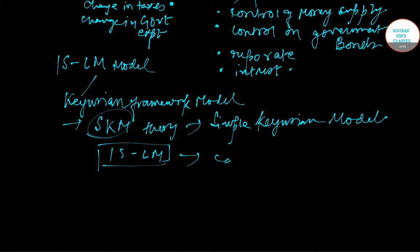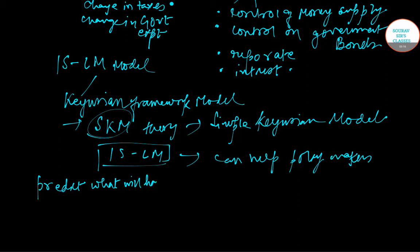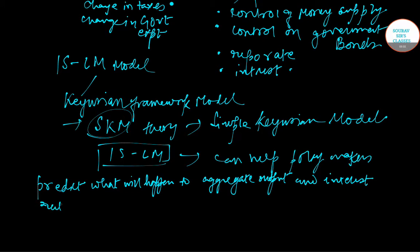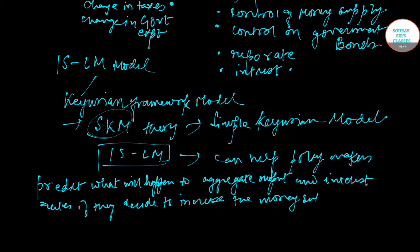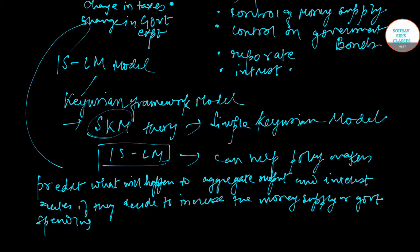The IS-LM curve can help policy makers predict what will happen to aggregate output and interest rates if they decide to increase the money supply or government spending — that is the expenditure part.